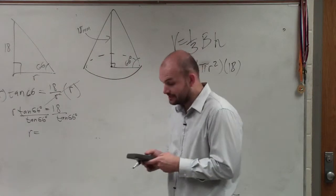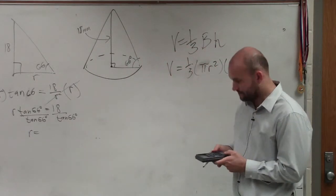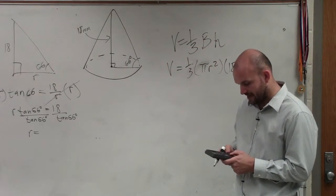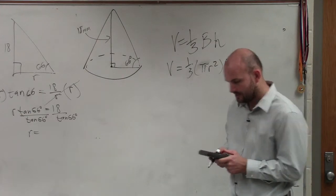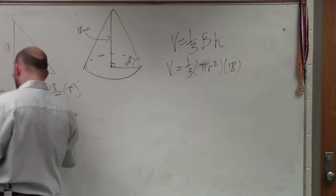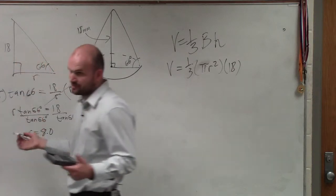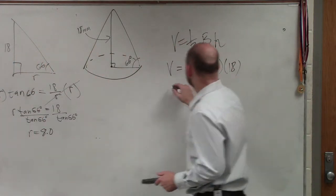So therefore, I now need to take my calculator. 18 divided by the tangent of 66 degrees. That's going to leave me with r equals 8.0 as I round to the 10th. I now plug in that.